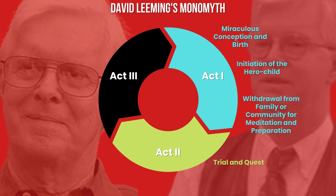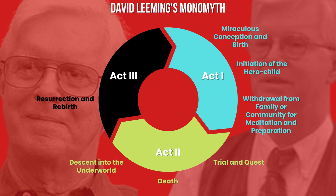Act 2 begins with the trial and quest, where the hero, now an adult, must face the outside world and experience struggle and reward. The next stage is death, where the hero dies under miraculous conditions and acts as a scapegoat for our fears and guilt. The last stage in Act 2 is the descent into the underworld, where the hero confronts death to find enlightenment. Act 3 only has two stages: the first is resurrection and rebirth, where the hero ascends from the underworld and rises from the dead. The final stage is ascension, apotheosis, and atonement, where the hero represents immortality and takes their last steps toward discovering God, completing the journey.